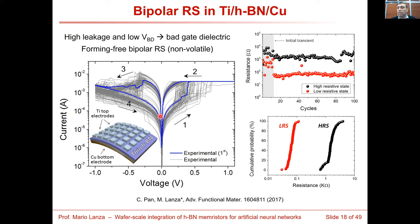However, my student noticed that when she applies a negative voltage, she recovers the initial high-resistive state, and she could do this for several cycles. This was our first demonstration of resistive switching in h-BN. A paper from NUS had appeared before ours, but they didn't prove the material was a layered structure. In our case, we confirmed the layered structure by TEM and published this discovery in Advanced Functional Materials.